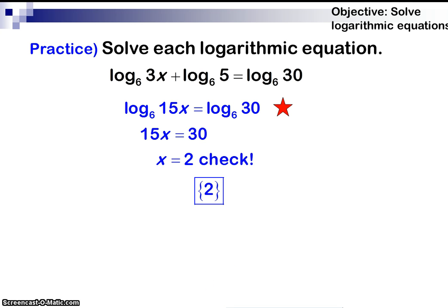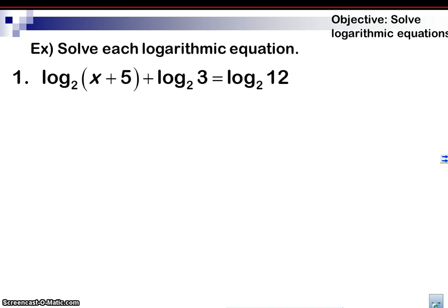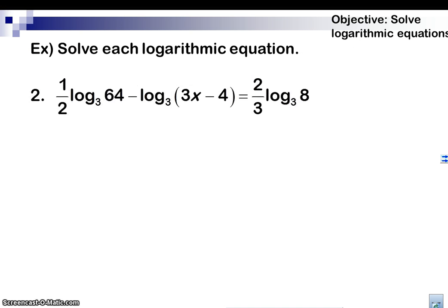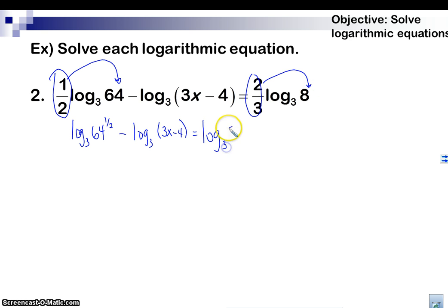All right, so let's take a look at this one here. Number two. So what are we going to do here? There's actually a lot of things you need to take in consideration. So here's a number in front of a log. So we're going to raise that up here as a power. That's the first thing we're going to do, so 64 to the 1 half power. And then let's hold on to this minus. We'll do that in the next step. And then this 2 thirds is in front of a log, so we're going to bring that up there, too. Log base 3 of 8 to the 2 thirds.